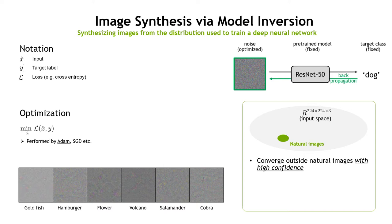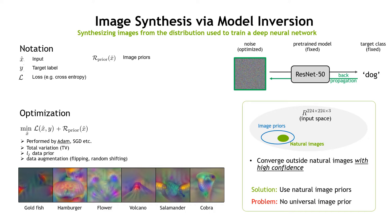However, as the model operates on the entire input space, optimization based on the original loss is very likely to converge outside the distribution of natural images with high confidence. One way to improve image quality is through image prior regularization, such as total variation. Image quality improves but remains unnatural.